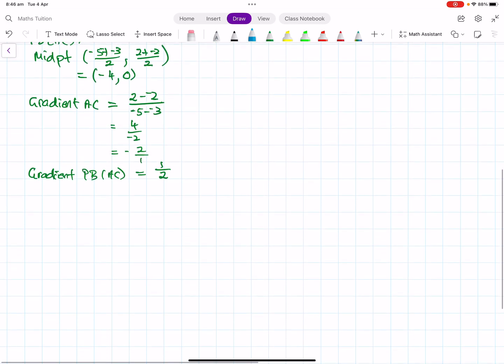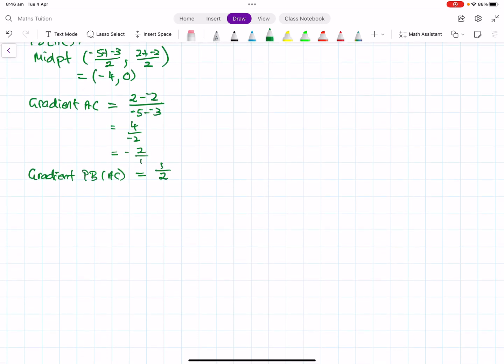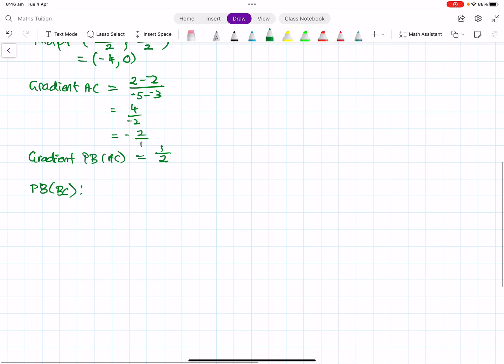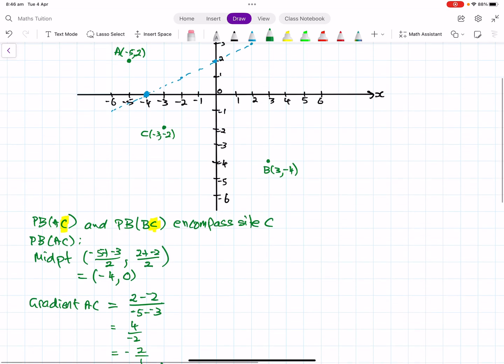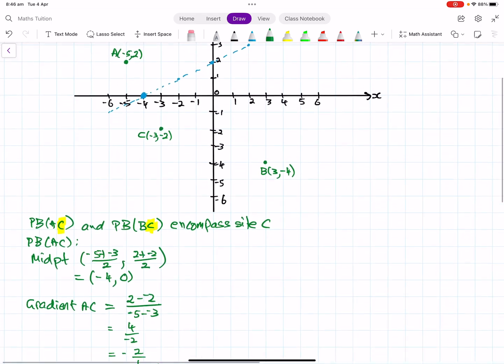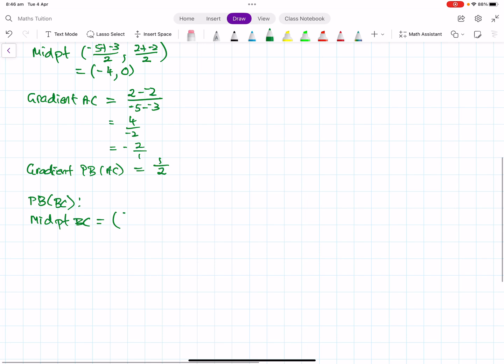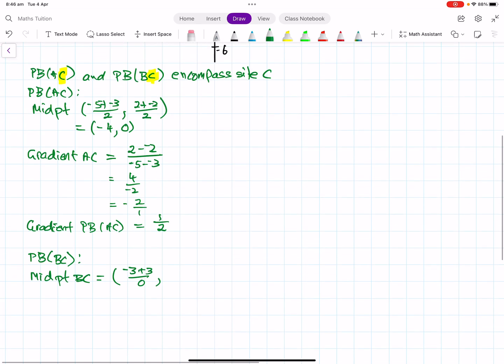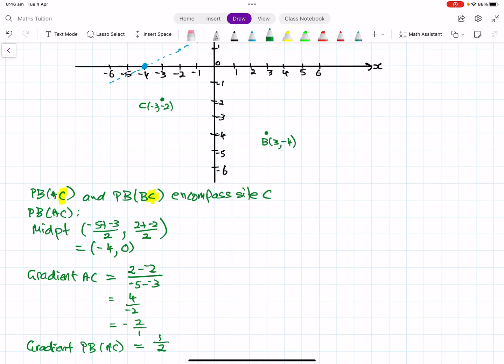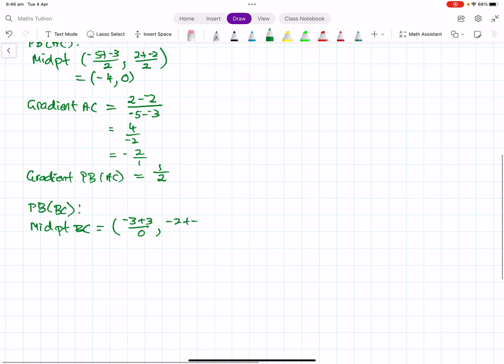Now the perpendicular bisector of BC. I have to scroll down a long way to get this in. So it's the perpendicular bisector of BC. So we start off with the midpoint of BC, which is the average of the x's, negative 3 plus 3 over 2, and average of the y's, which is negative 2 plus negative 4 over 2. And that gives us 0 for that one. So this has been nicely rigged. And negative 3.